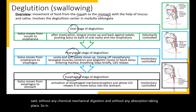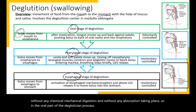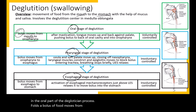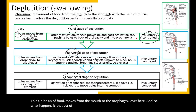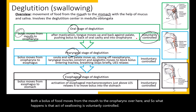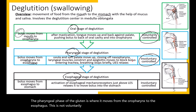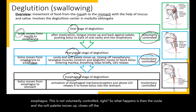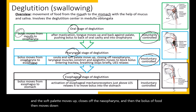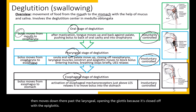In the oral phase of deglutition, the bolus moves from the mouth to the oropharynx, and this act of swallowing is voluntarily controlled. The pharyngeal phase moves the bolus from the oropharynx to the esophagus and is not voluntarily controlled. The uvula and soft palate move up to close off the nasopharynx, and the bolus moves past the glottis — which is closed off by the epiglottis — and enters the esophagus.